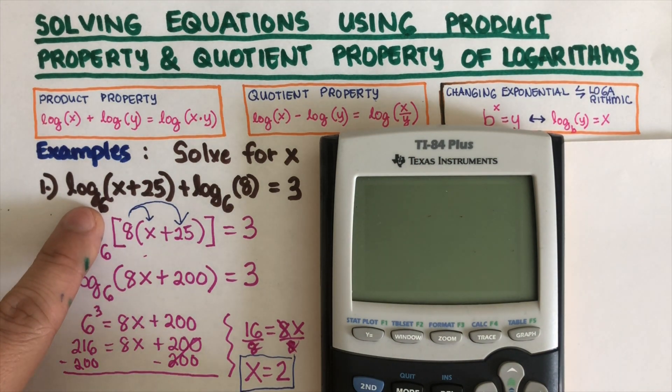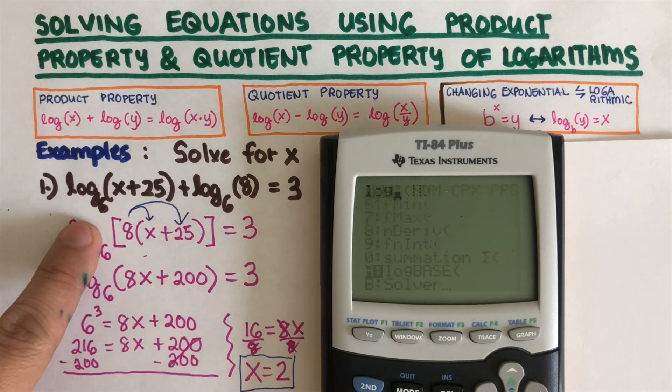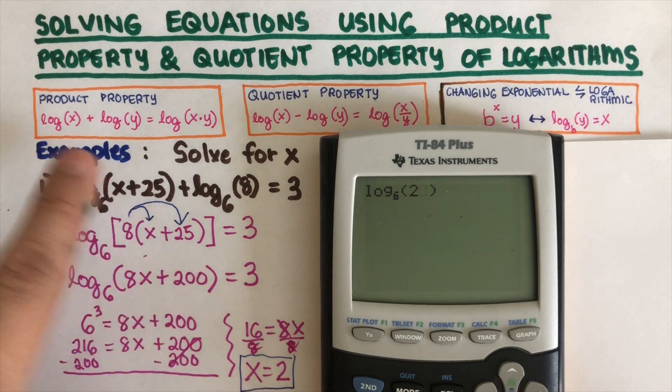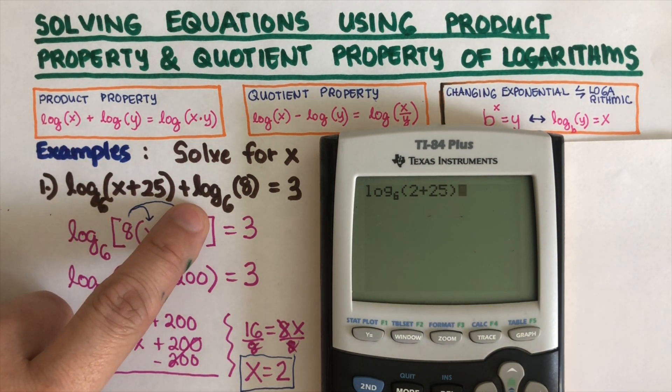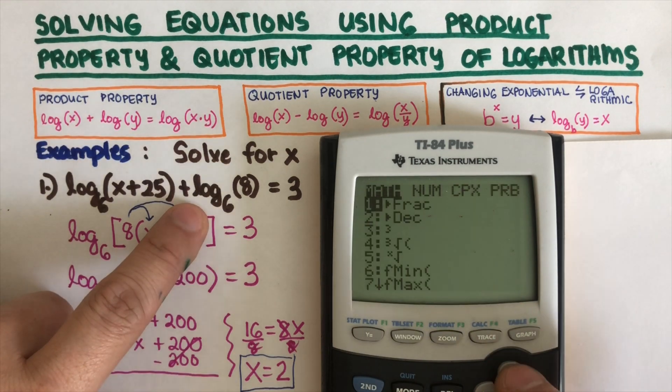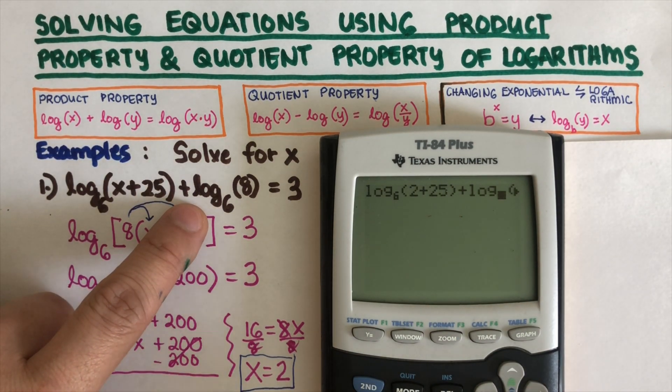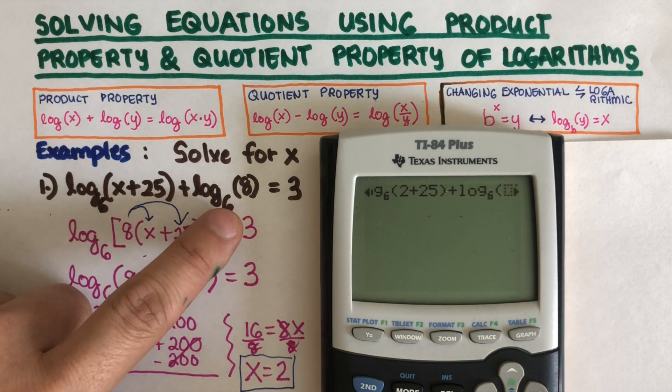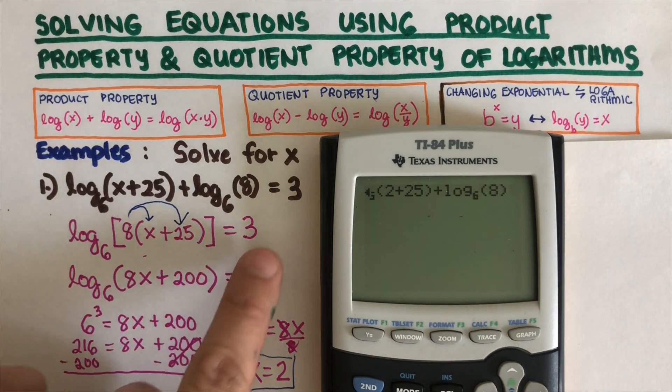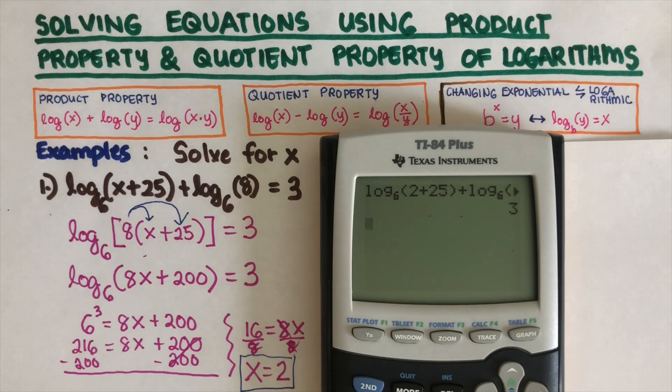Let's set this up first, so that would be log base 6. Our x is 2 plus 25, and then plus log base 6 of 8. When I enter this it should be equal to 3, and that is equal to 3, so that means our x value is correct.